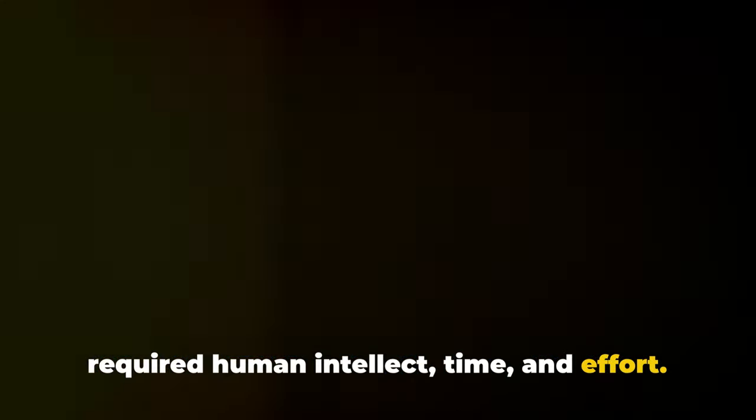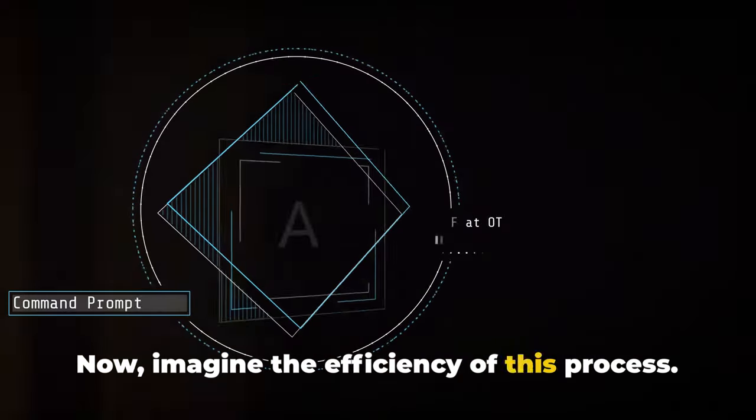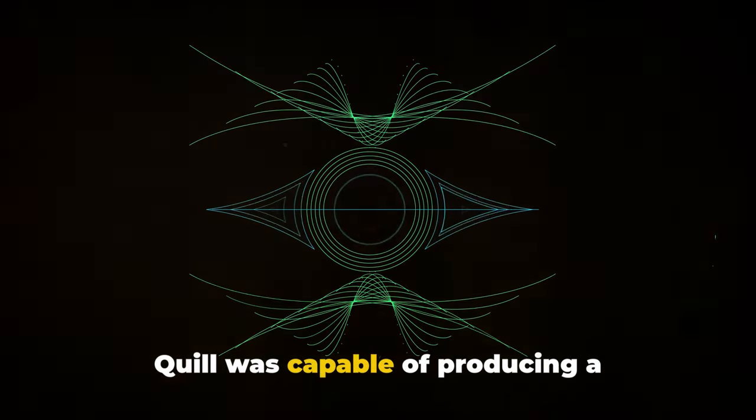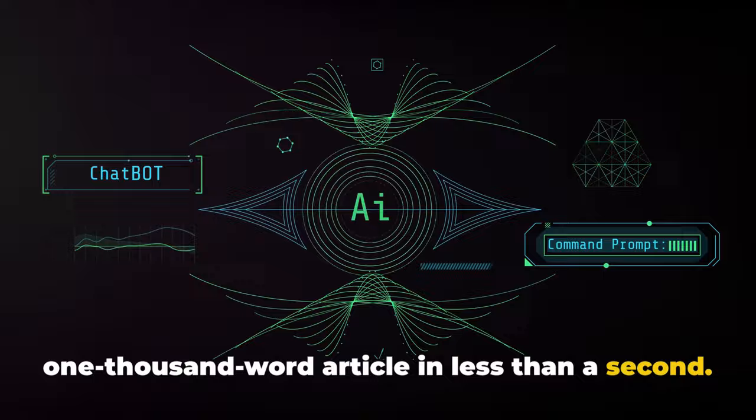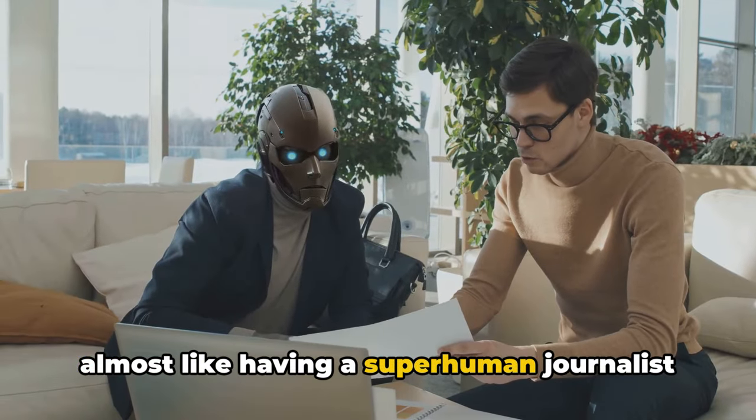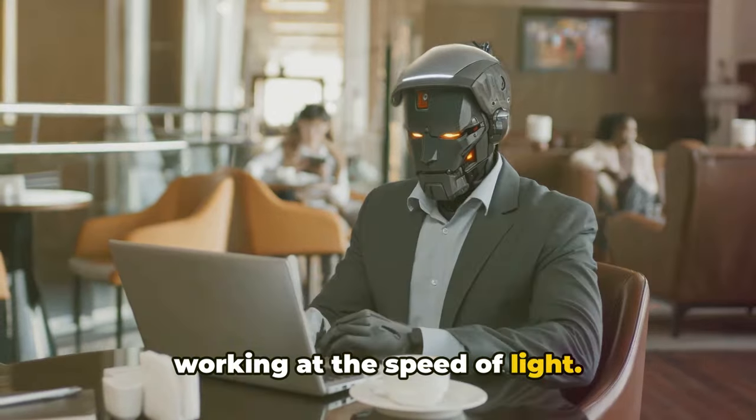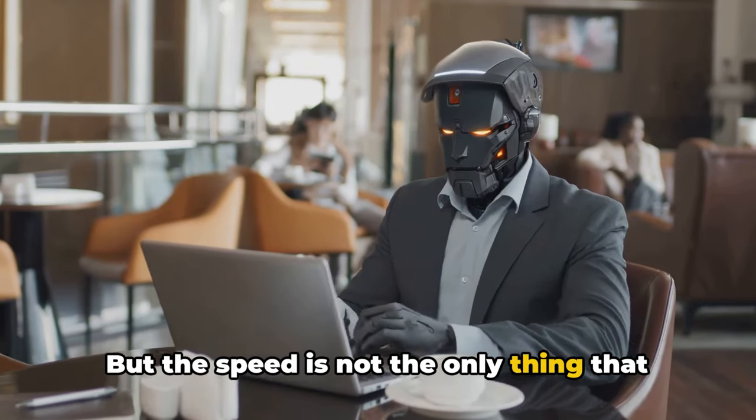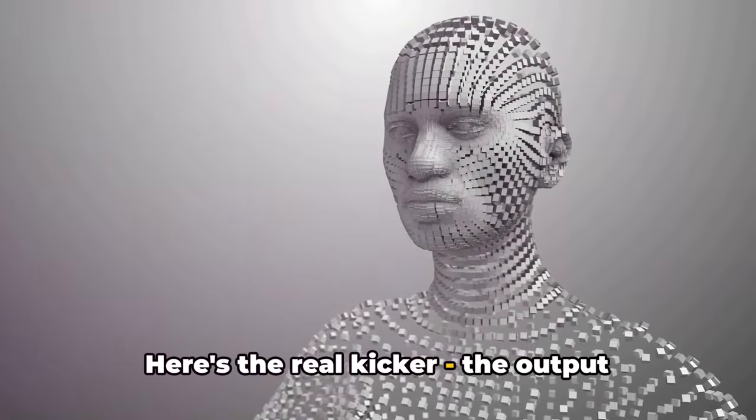Now imagine the efficiency of this process. Quill was capable of producing a 1,000-word article in less than a second. That's right, less than a second. It's almost like having a superhuman journalist working at the speed of light. But the speed is not the only thing that astounds us here.